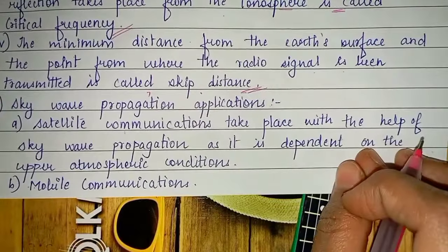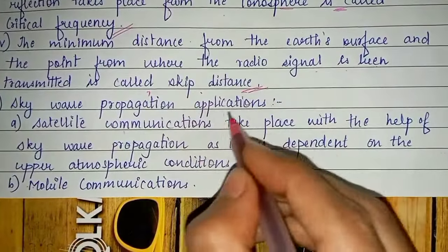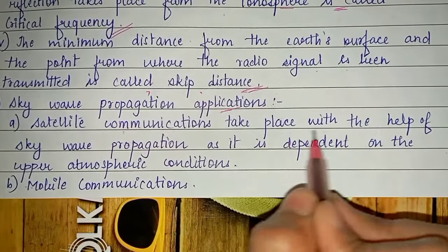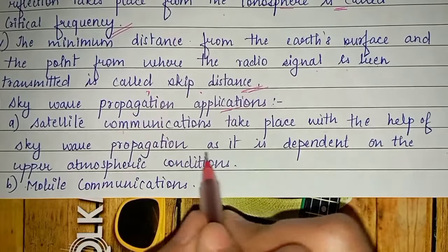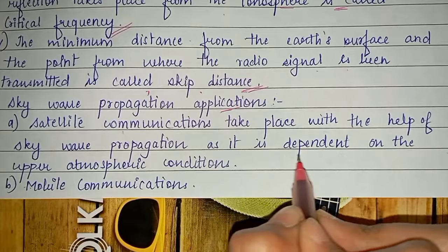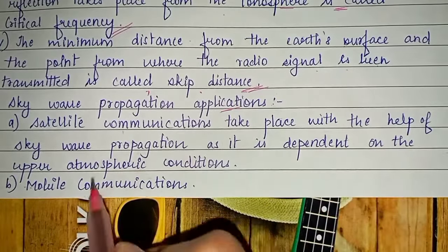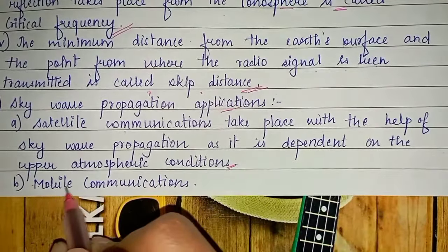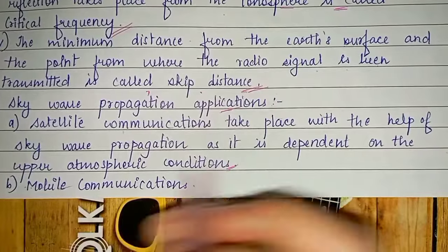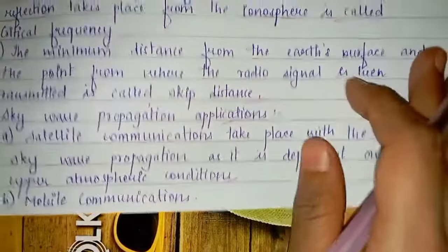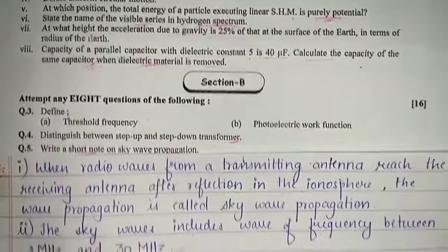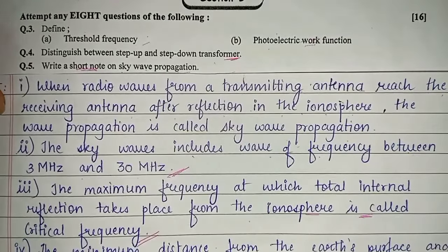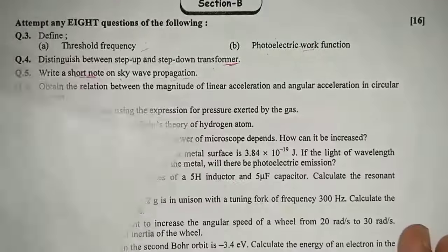The minimum distance from the Earth's surface to the point from where the radio signal is transmitted is called the skip distance. Applications of sky wave propagation: satellite communications take place with its help, and it is also used in mobile communication.